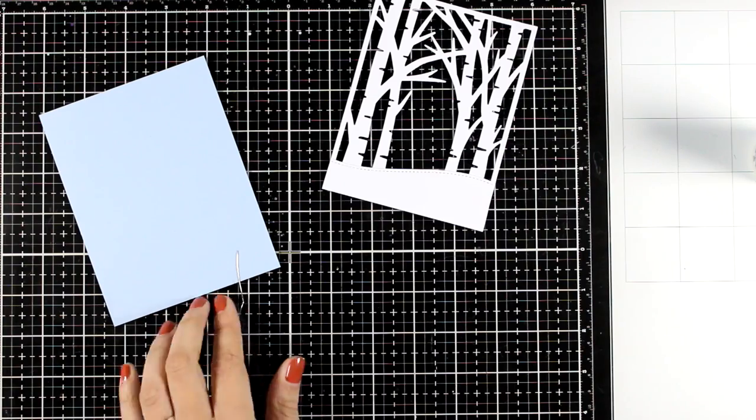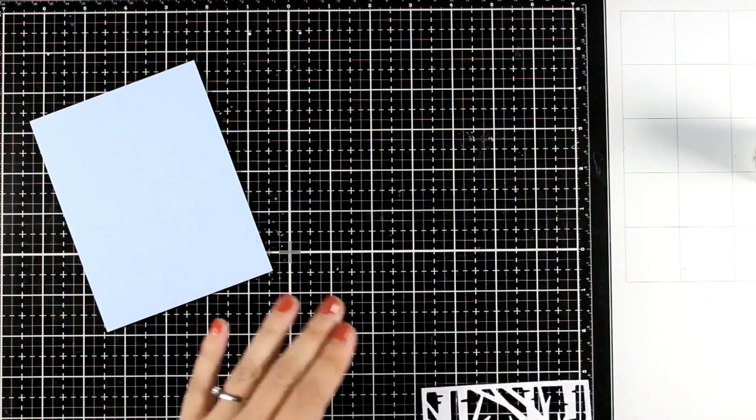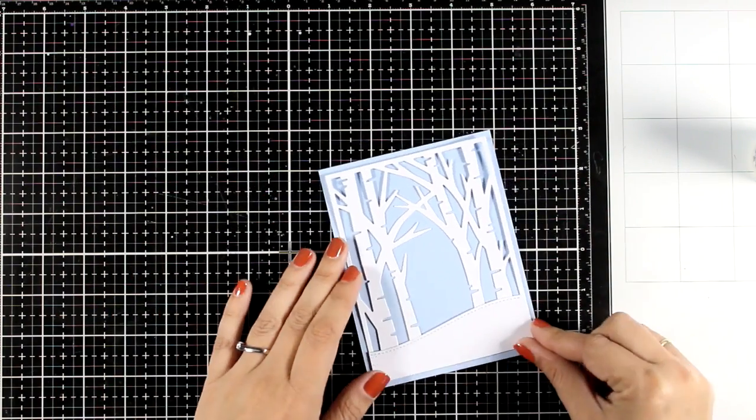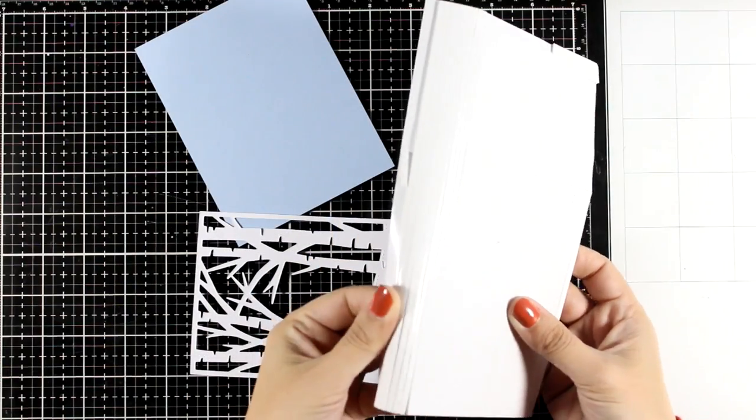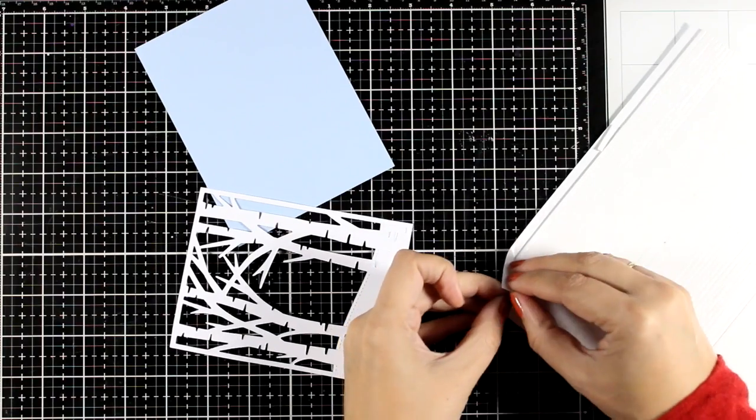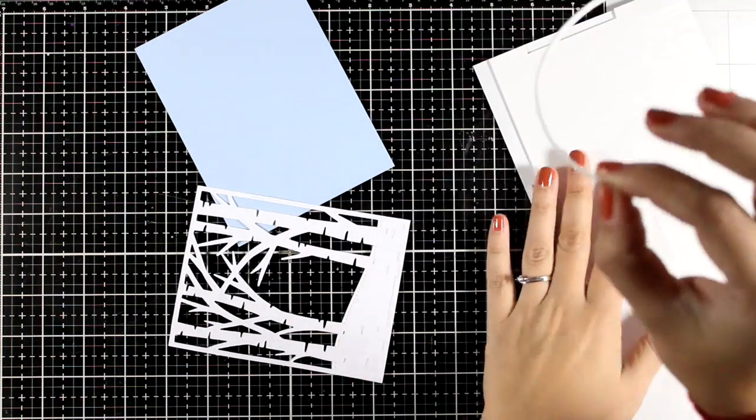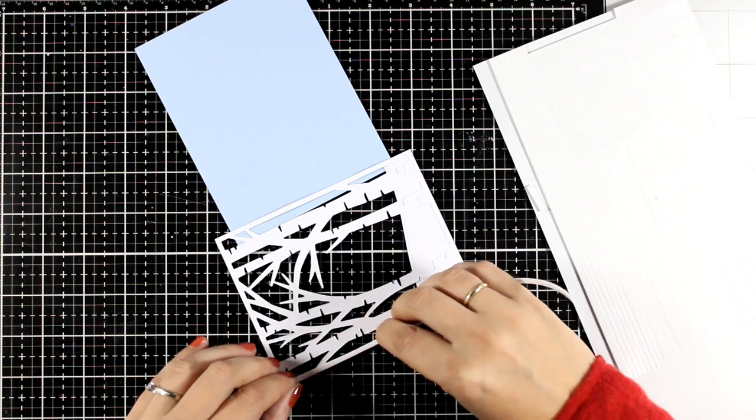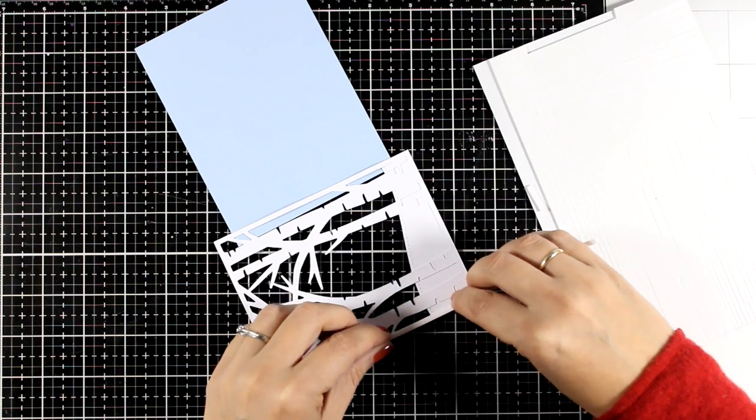And now at this stage I was going for a shaker card, and that's why I grabbed those very thin strips of foam tape so that I can go all around my panel. These are really handy to use and they are by Waffle Flower. I will leave a link down below.